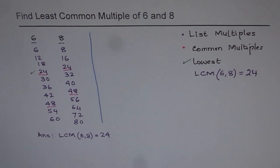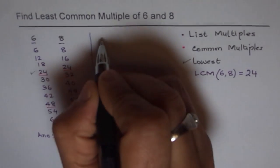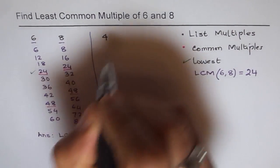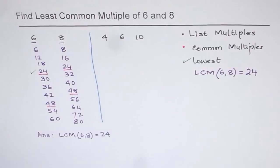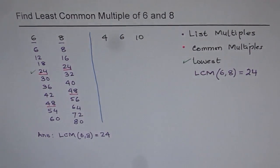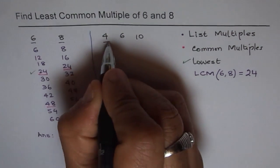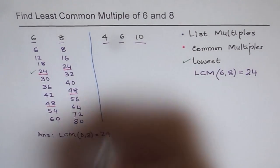So as an exercise, what we will do is, we will now take up three numbers. For example, let's take numbers like 4, 6 and 10 and check for ourselves what are the common multiples and then which one is the least common multiple. Now, try doing this on your own.